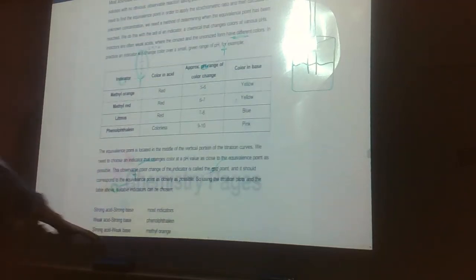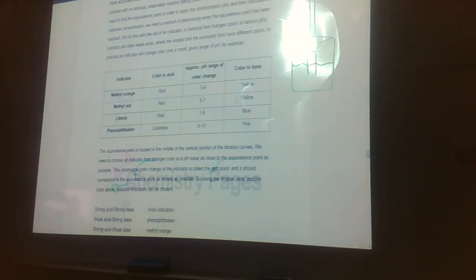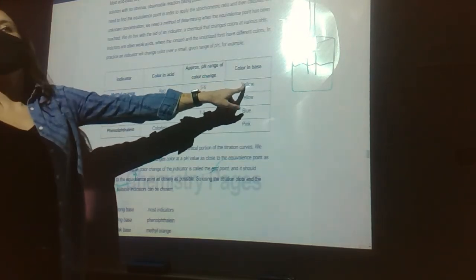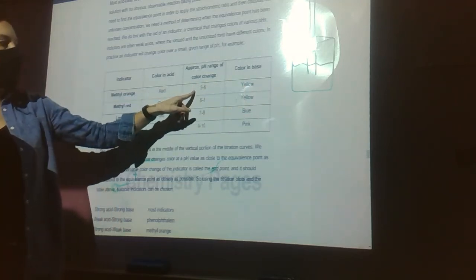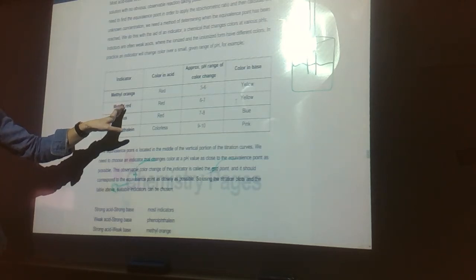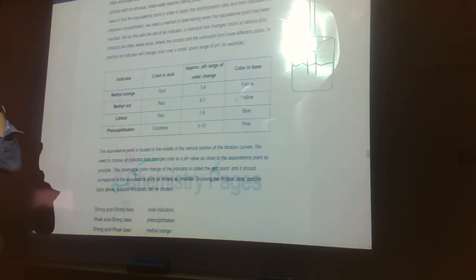Indicators. We put an indicator in our acid so that as we're adding base it changes color and we can tell in an experiment when we've reached the equivalence point. Indicators are pH sensitive. There are different colors depending on the pH. Methyl orange is red in acid and then it turns yellow in base, and that color change happens about a pH of 5 to 6. So this is good when your acid is stronger than your base and your equivalence point is going to wind up less than 7. Methyl red is similar except it has a slightly higher pH range but it goes from red to yellow.